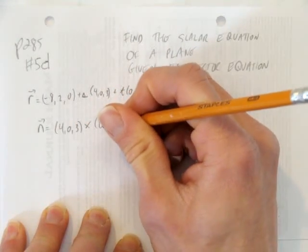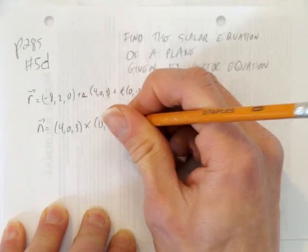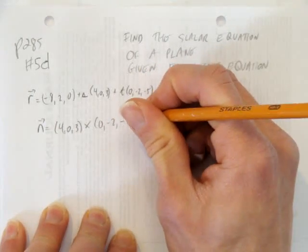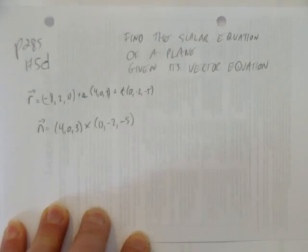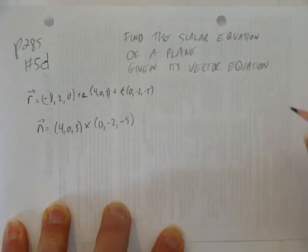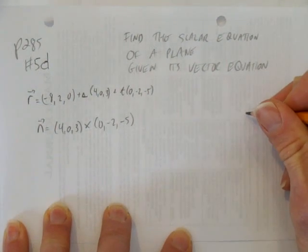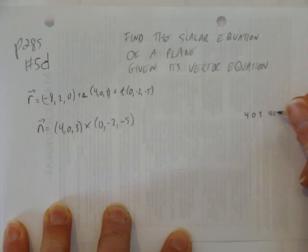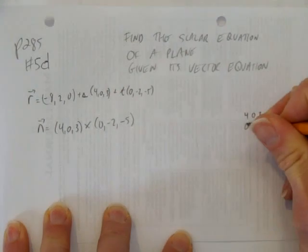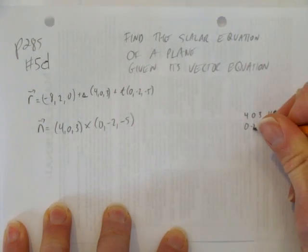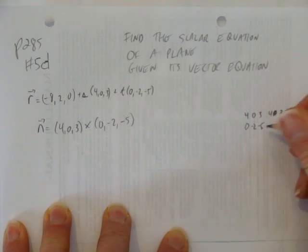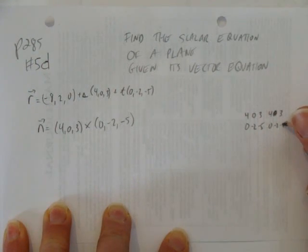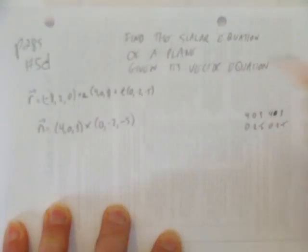We're going to have to take the cross product of 4, 0, 3 and 0, negative 2, negative 5. So somewhere on the side, maybe over here, we'll want to show our work. We do the little fish or fish bowl, whatever you want to call it. And that is where we write down both vectors. If you're not familiar with this, please watch the video on cross product. Right now, I'm just setting up a little trick to do cross product.